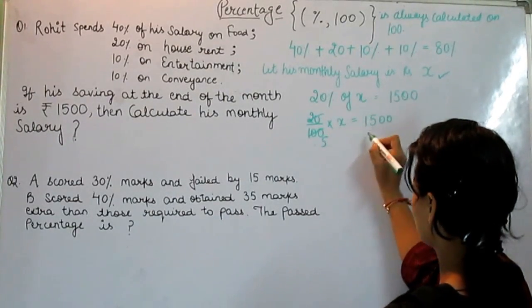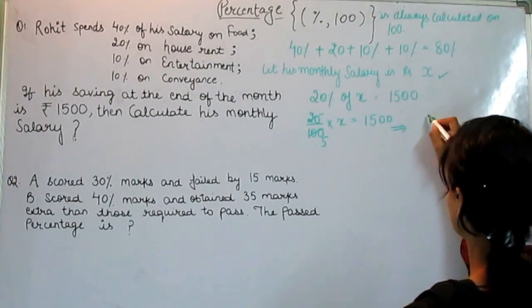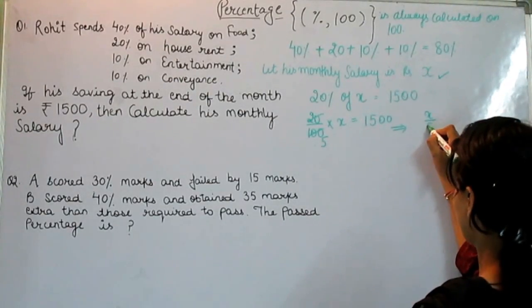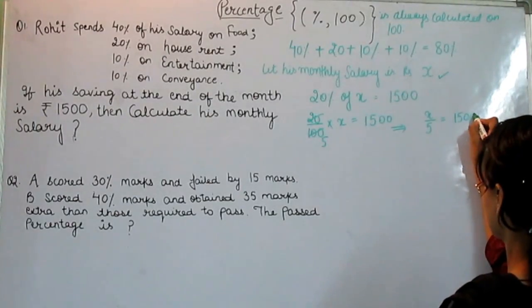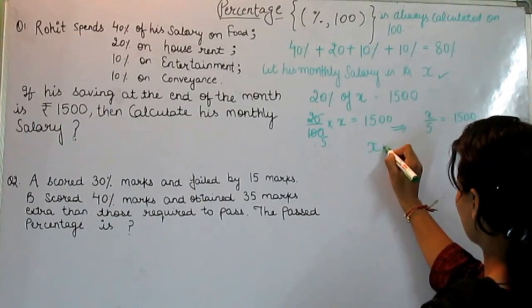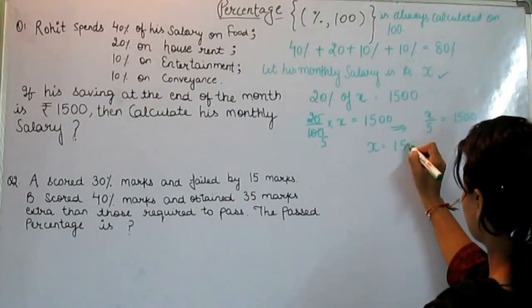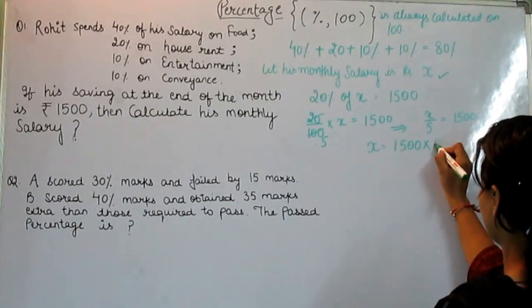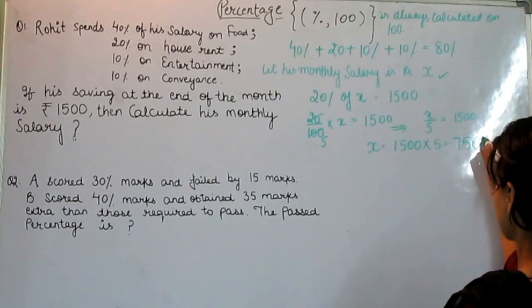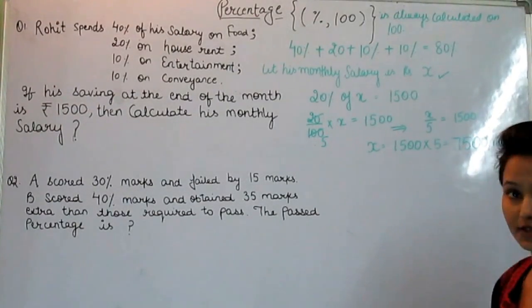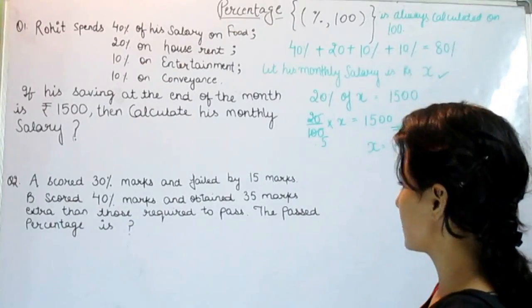This is 5. So we are left with x by 5 is equal to 1500. From here we can have the value of x that will be 1500 into 5. This is the answer. So start second question.